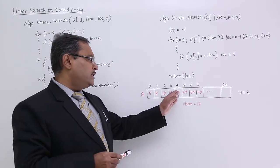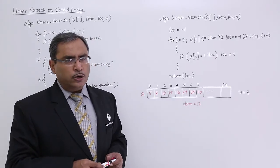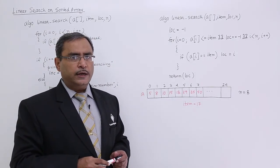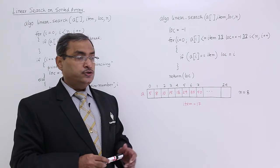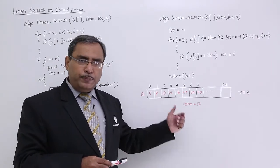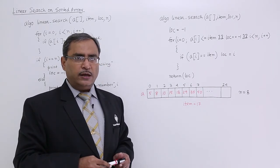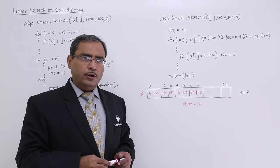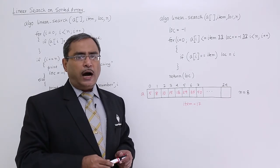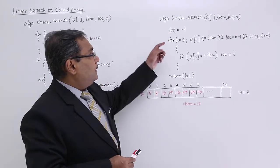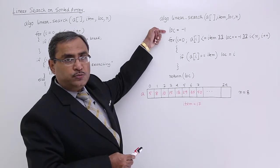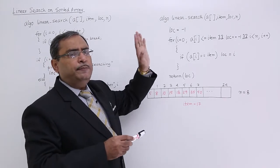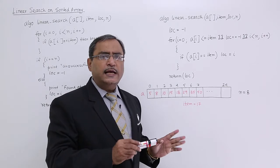Then I need not to search for the rest of the data residing in this array. That is the update I shall have to bring in my linear search algorithm when it is getting carried out on a set of data which are pre-sorted. I am making this lock is equal to minus 1. Why lock is equal to minus 1? I am taking that unsuccessful searching has taken place.